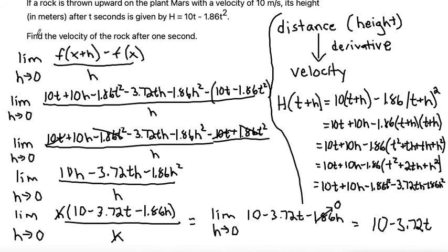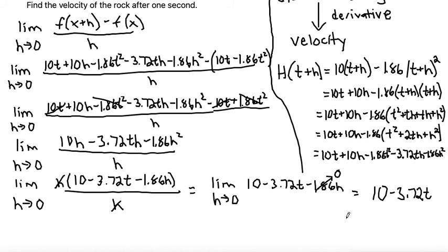Since I'm trying to find the velocity of the rock after one second, I can plug in 1 for t. That makes 10 - 3.72(1). Simplifying, 10 - 3.72 is 6.28. Just to put a unit to that, my distance function was in meters and my time was in seconds, so that will be meters over seconds. That would be my final answer for this problem: 6.28 m/s.